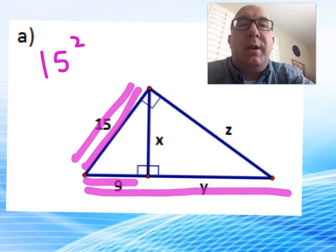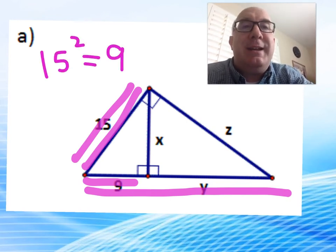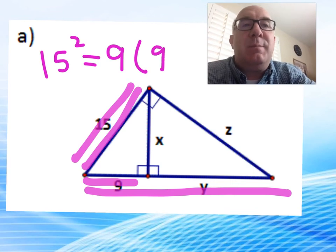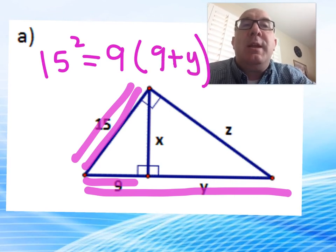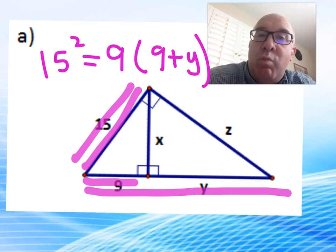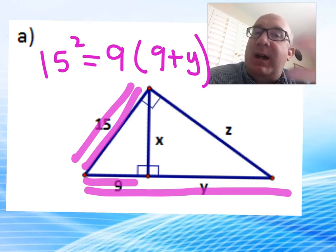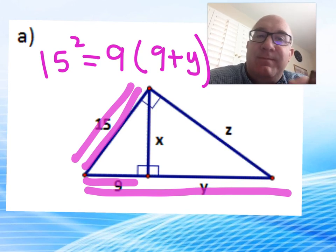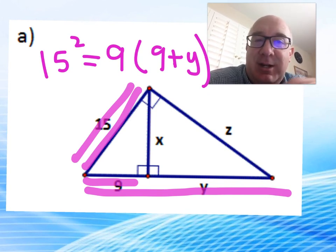15 squared would equal 9 times 9 plus y. That's the best of the three geometric means because it has only one variable. If you start with that one, once you get y, the other pieces fall into place. Good luck.